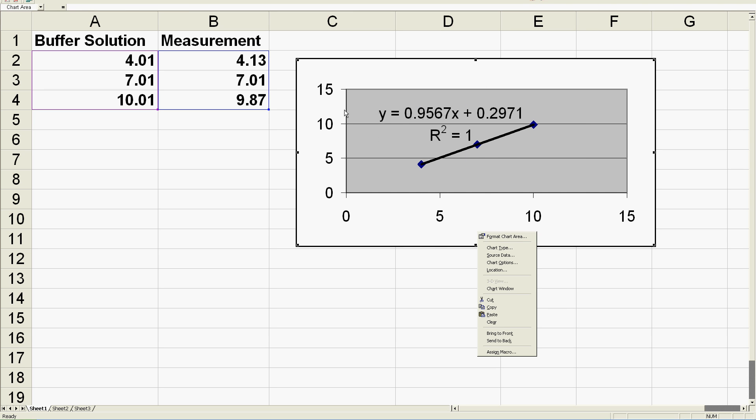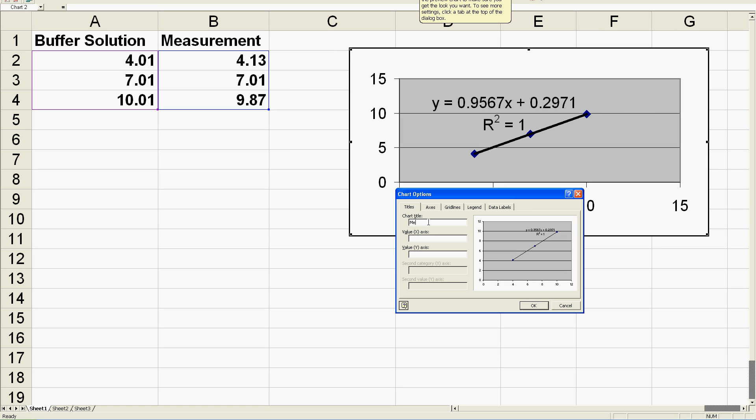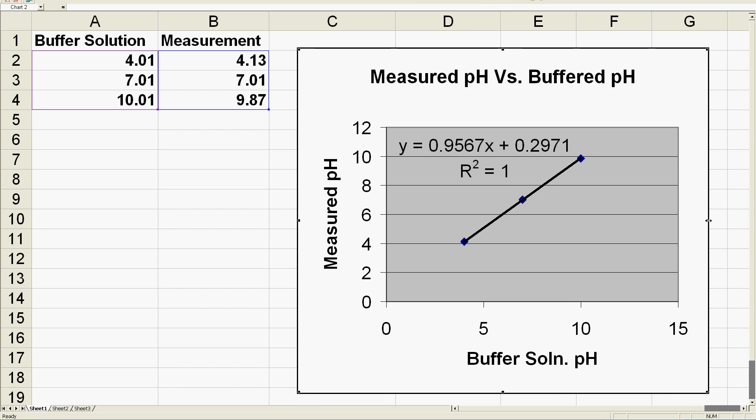Then simply add a linear trend line through all the points. This is also known as a linear regression. Now you have a calibrated curve that compensates for the non-idealities of your glass electrode.